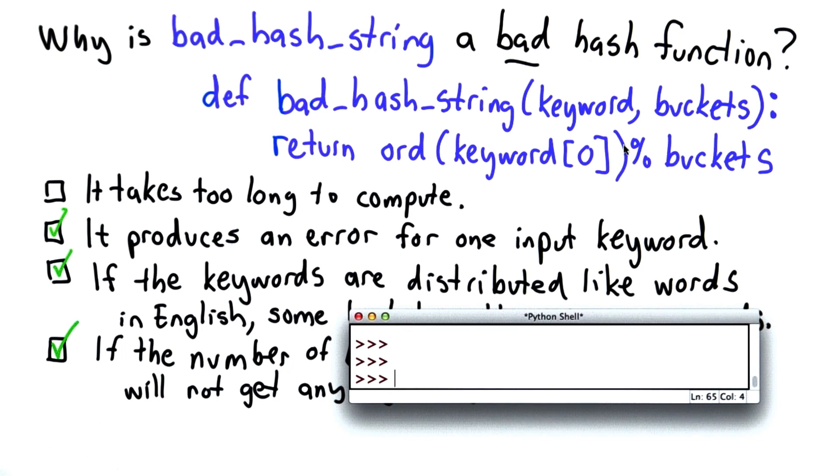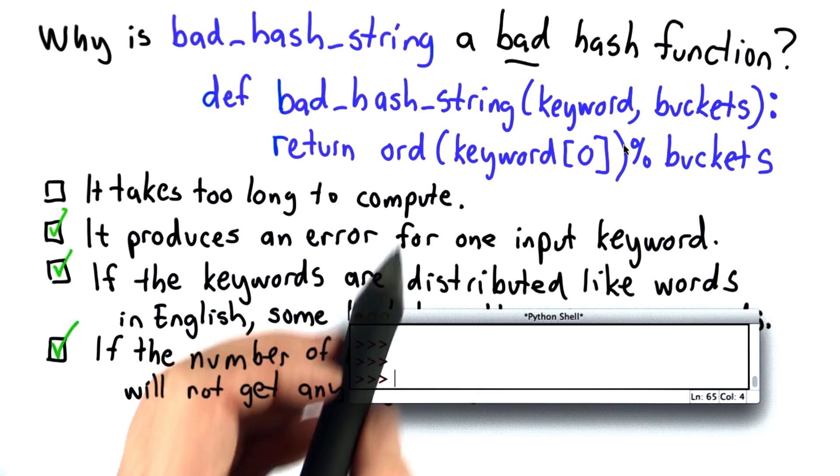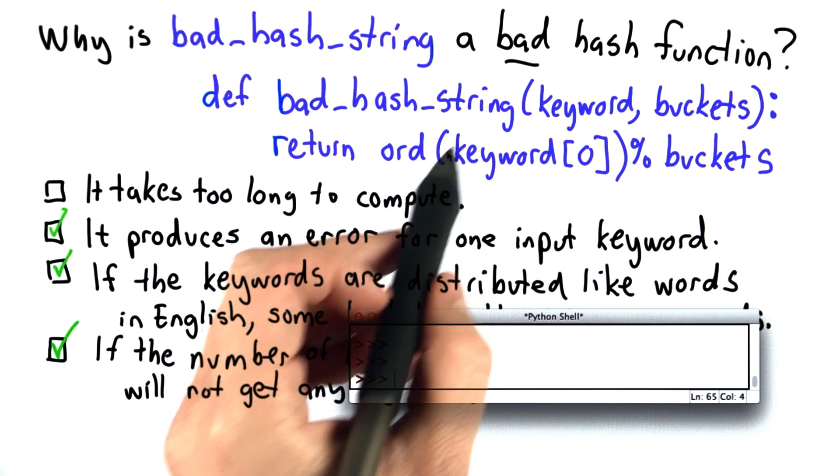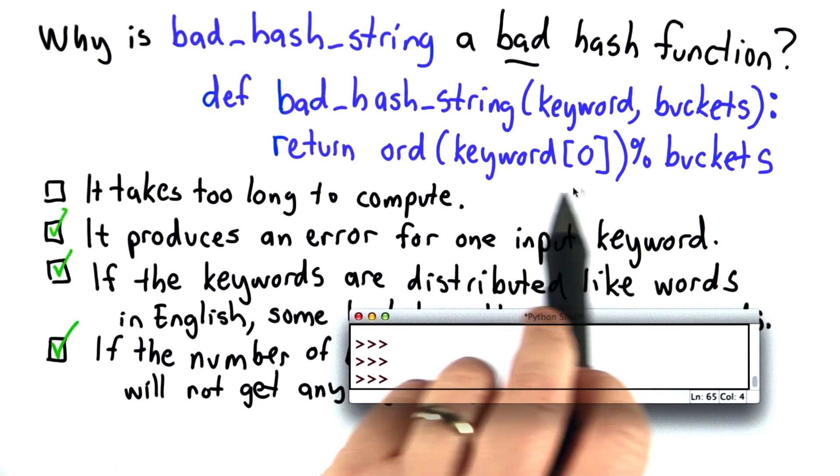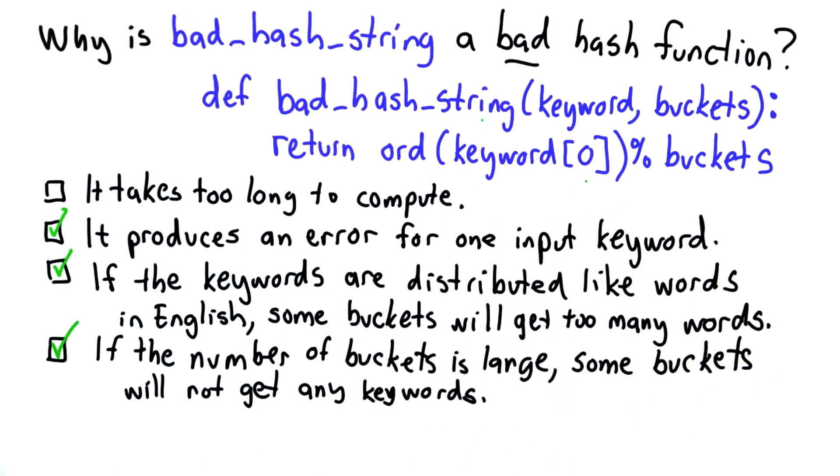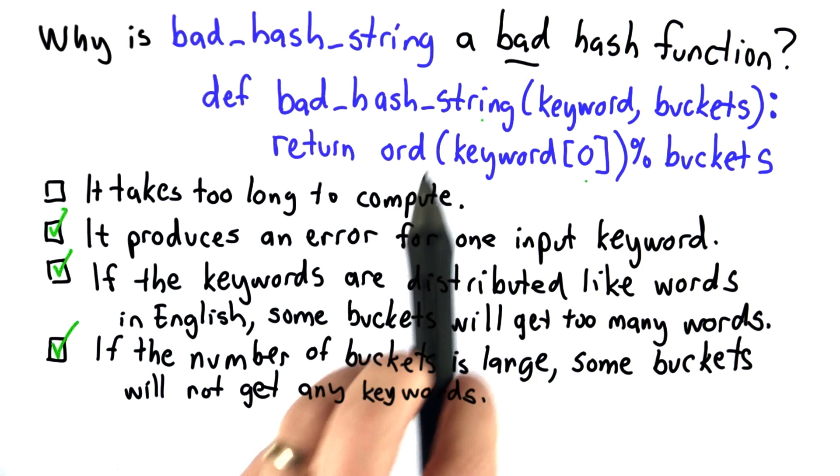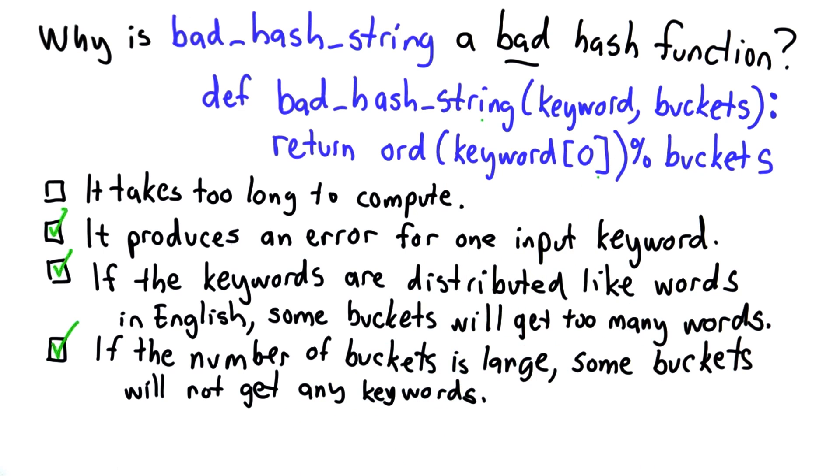And the one that's usually the trickiest to think about is the boundary case. For a string, that's often the empty string. So if we pass in a string with no characters in it, which is a perfectly valid string, well then when we try to index element 0, that would be an error.